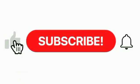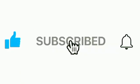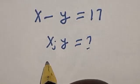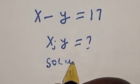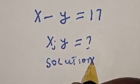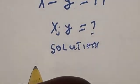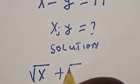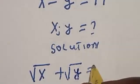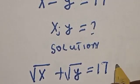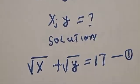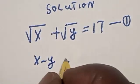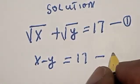But before we move on, like, share, comment and subscribe. Thank you. Solution. We have square root of x plus square root of y is equal to 17 — let's call this equation 1. Also, x minus y is equal to 17 — let's call this equation 2.